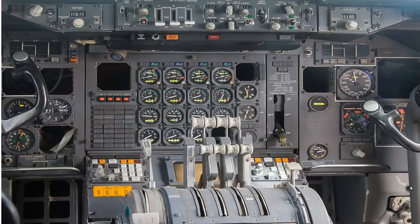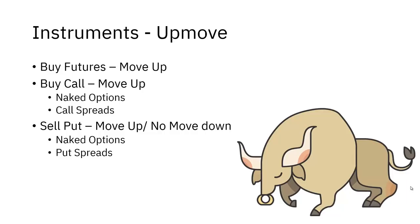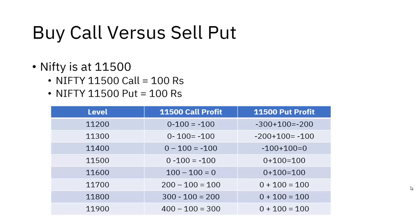So we have three things: the direction of the move, the quantum of the move, and the time frame of the move. Now let's put this in a real-world scenario. For an up move, you can buy futures, buy a call — either naked or as a bull call spread — or you can sell a put, which is either a move up or a 'no move down.' That distinction is extremely important. If you're betting against a down move, the instrument of choice is either a naked sell put or a sell put spread.